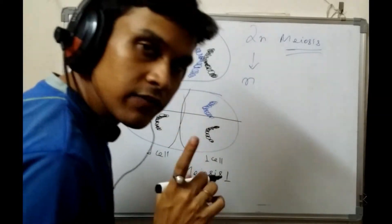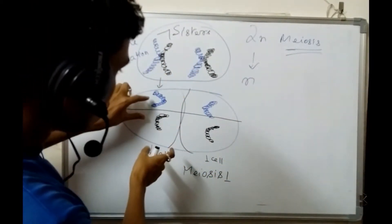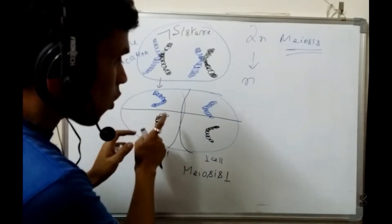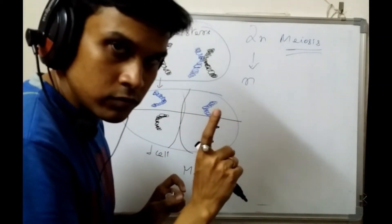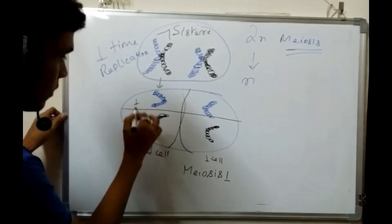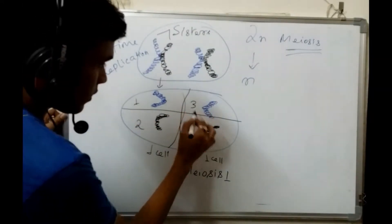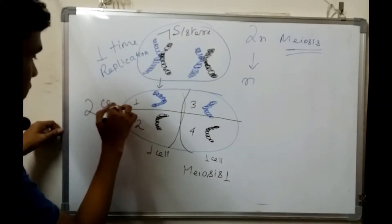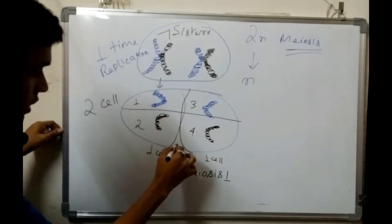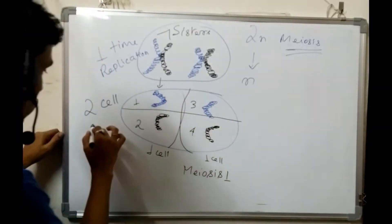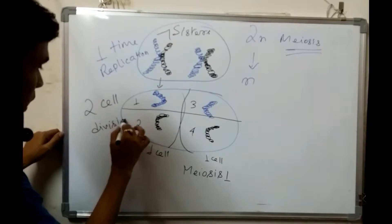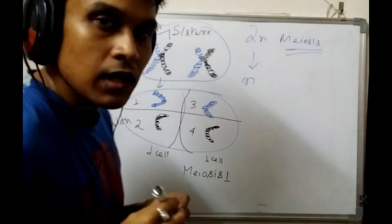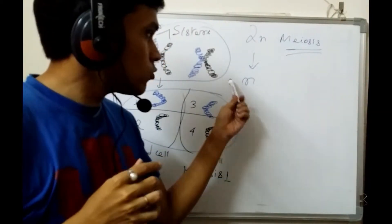Instead of having two chromosomes in a cell, after the second division each cell contains only one chromosome. So there are two cell divisions in meiosis, but only one time of DNA replication. That is why the chromosome number is reduced from 2N to N.